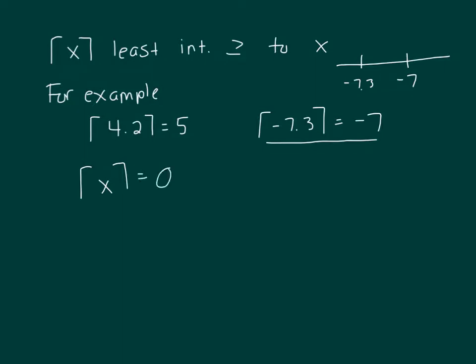What are the values of x? If you look at the number line, here is 0, this is negative 1. Any of these numbers in here, the least integer greater than or equal to any of those numbers will be 0.